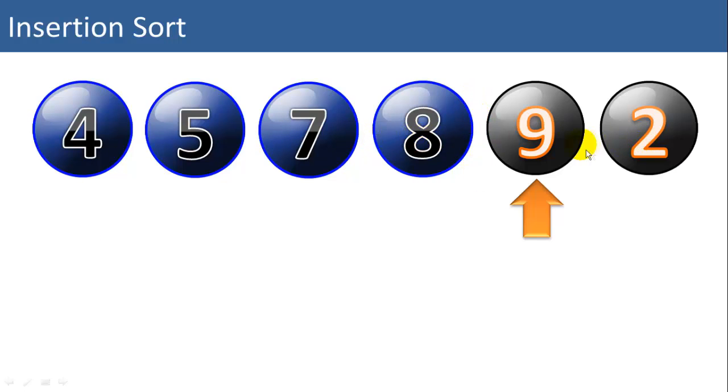We have 2 items left in our unsorted part of the list. So we consider the 9. Is 9 less than 8? No, so the 9 we can consider already sorted.